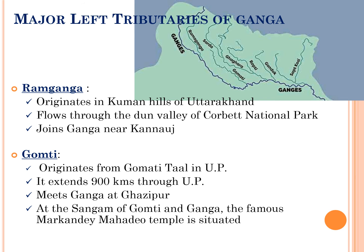The first major left tributary of Ganga river is Ramganga, which originates in Kumaon Hills of Uttarakhand state. It flows through the Doon Valley of Corbett National Park and finally meets the Ganga near Kannauj; Bareilly city is situated on its banks. The next left tributary is Gomti river, which originates from Gomti Tal in Uttar Pradesh state. It extends about 900 kilometers through Uttar Pradesh and meets the Ganges at Ghazipur. The famous Markandaya Mahadeva temple is situated at the Sangam of Gomti and Ganga.